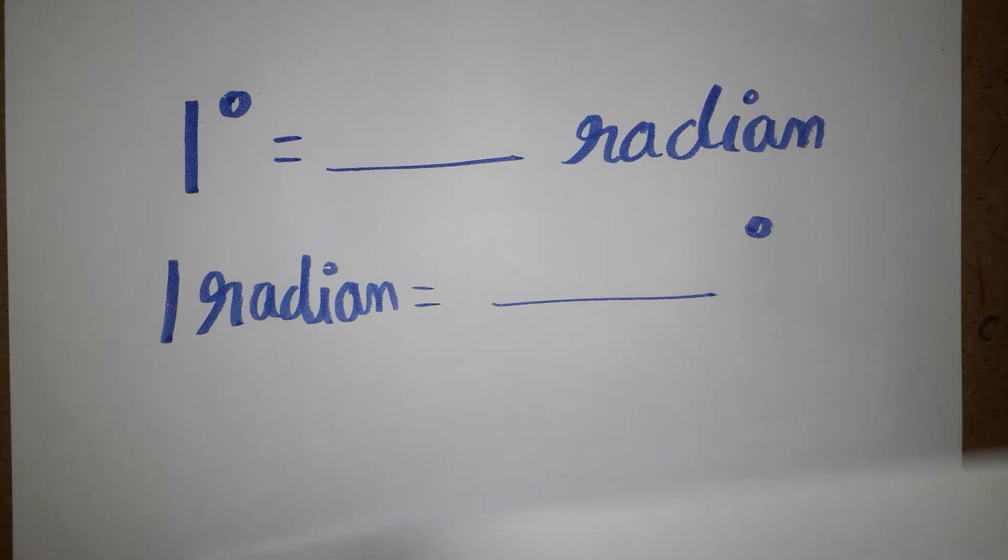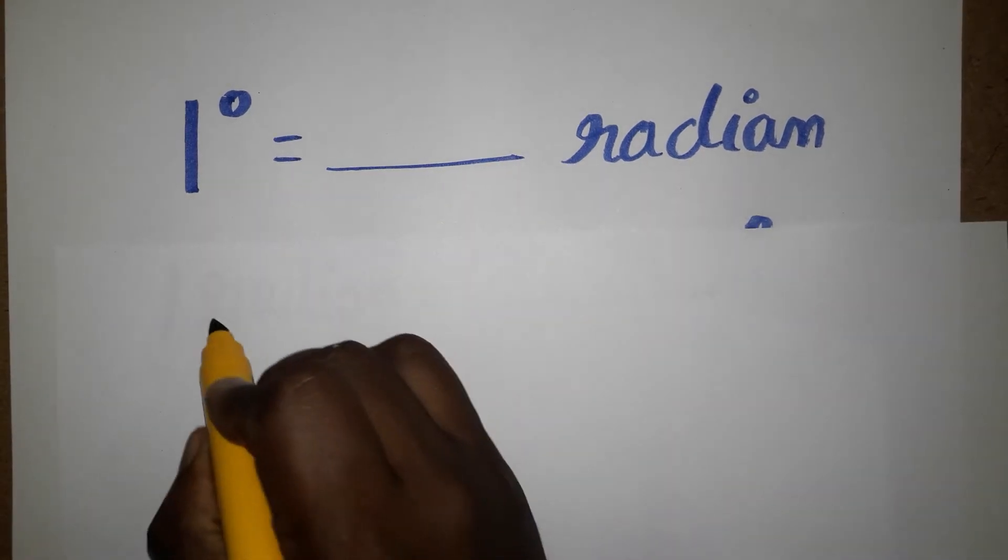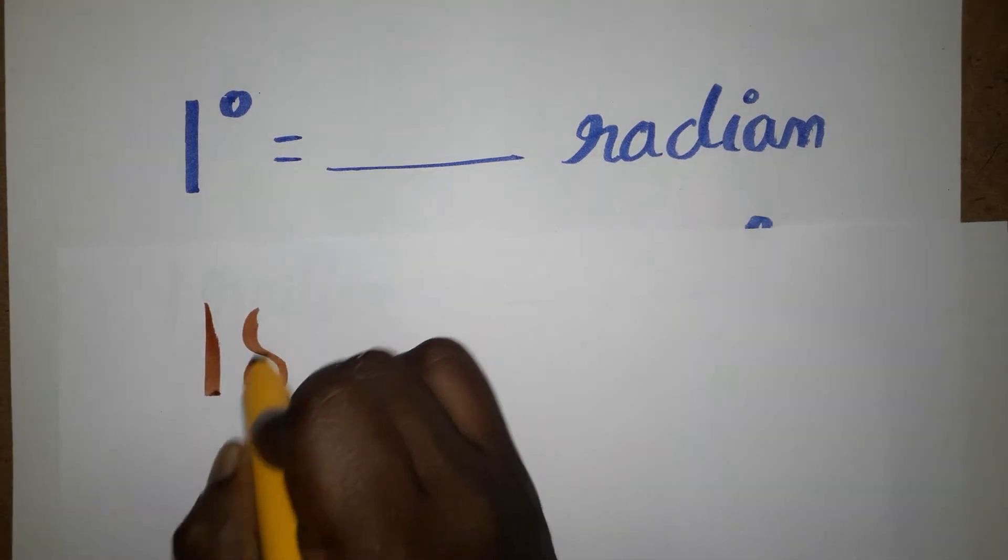First, you will see that 180 degrees equals π radians. It's a very easy value. Before going to this conversion, we need to know that 180 degrees we can take as π.